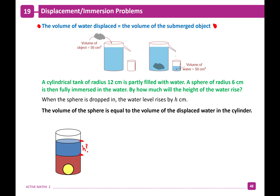Write down what you know first. The volume of the sphere equals the volume of the displaced water. The volume of a sphere is 4/3 π r³, and the radius of the sphere is 6 centimeters. So the volume of the sphere is 4/3 π × 6³, which gives us 288π centimeters cubed.